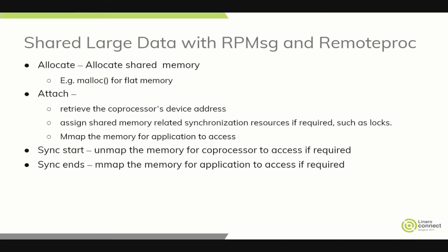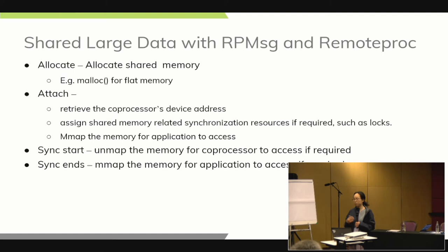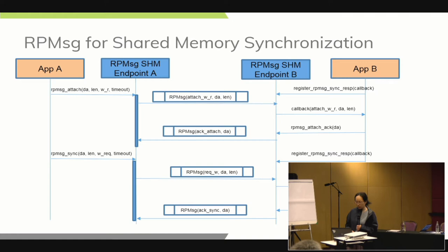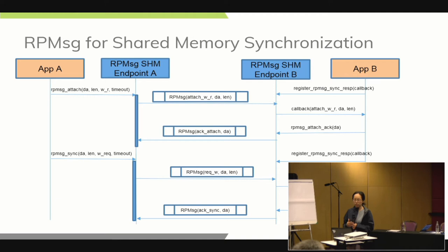For a flat memory system, allocation can be simple — for example, using malloc. However, if the OS is more complicated and memory is not flat, such as in Linux with kernel space and user space, a more complicated approach is needed. The idea is to use RPMsg for shared memory synchronization — using RPMsg to tell the coprocessor where the shared memory is and to sync up. This service does not yet exist in OpenAMP today, but it appears to be a very common issue, so we are working on a common RPMsg service to cover it.